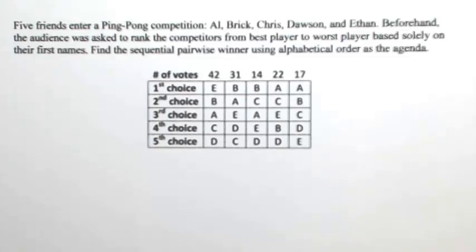Five friends enter a ping-pong competition: Al, Rick, Chris, Dawson, and Ethan. Beforehand, the audience is asked to rank the competitors from best player to worst player based solely on their first names. Find the sequential pairwise winner using alphabetical order as the agenda.